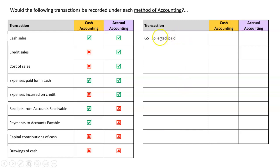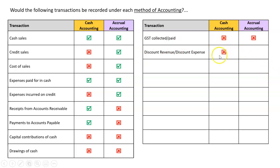GST is never a revenue and never an expense under either method. Discount revenues and discount expenses are trickier. Under cash accounting they don't appear on their own because there's no direct inflow or outflow of cash — you're simply spending less or receiving less. Under accrual accounting, however, discount revenues and discount expenses are legitimate revenues and expenses because saving or receiving less money meets the definition of a revenue or expense.